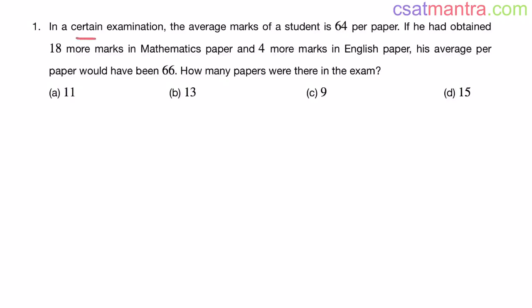In a certain examination, the average marks of a student is 64 per paper. If he had obtained 18 more marks in mathematics paper and 4 more marks in English paper, his average per paper would have been 66. How many papers were there in the exam?